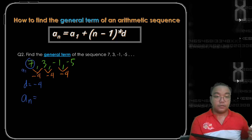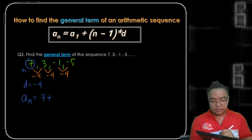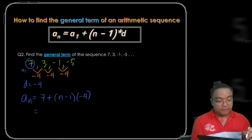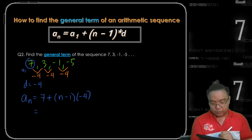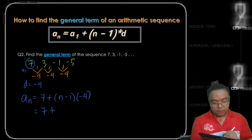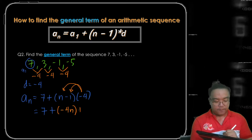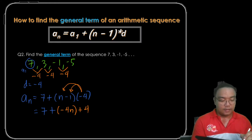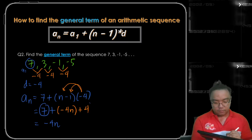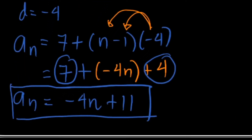To write our general term: a sub n equals the first term 7 plus (n minus 1) times the common difference of negative 4. Simplifying this expression: 7 plus — don't forget to distribute negative 4 to (n minus 1) — giving us negative 4n plus positive 4. Combining like terms: negative 4n first, then 7 plus 4 gives us positive 11. So the general term is negative 4n plus 11.